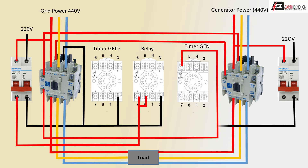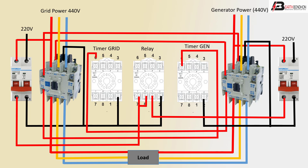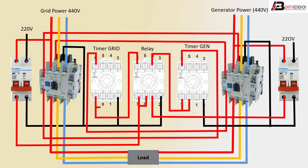Negative to timer connection, coil connection magnetic contactor. Positive line to timer connection, NC magnetic contactor to timer connection. Timer to timer connection, positive line — full diagram is complete. Automatic transfer switch (ATS) circuit board. Thank you.